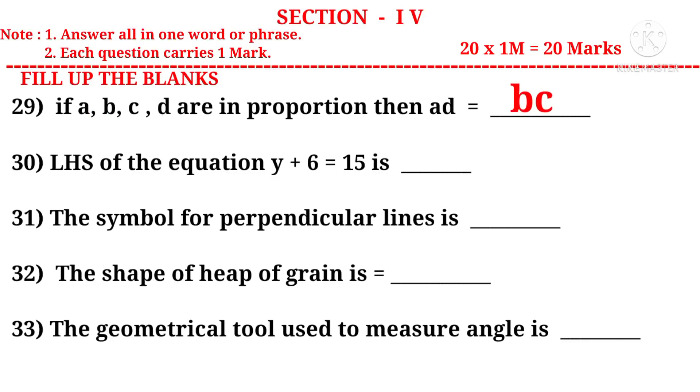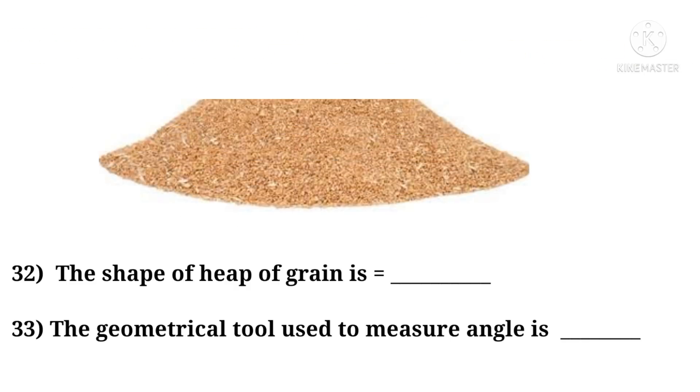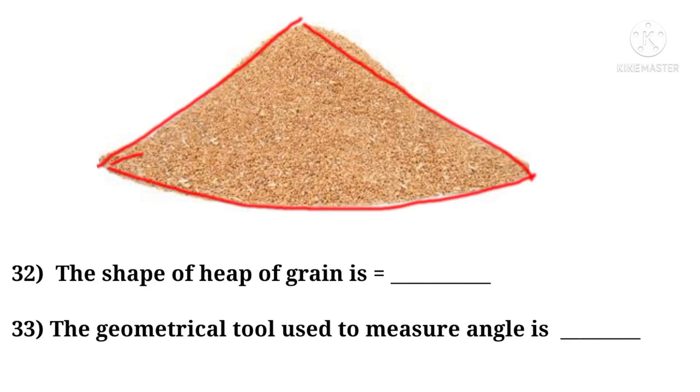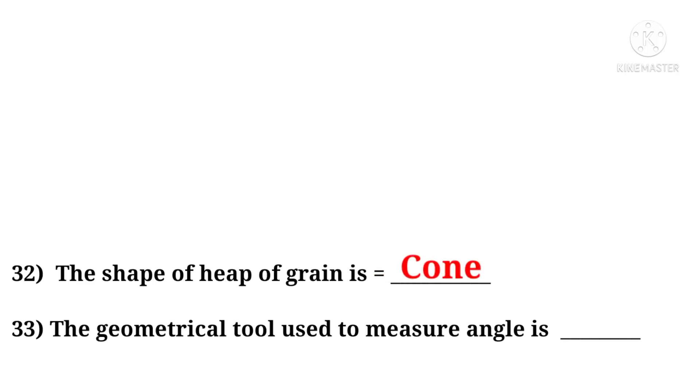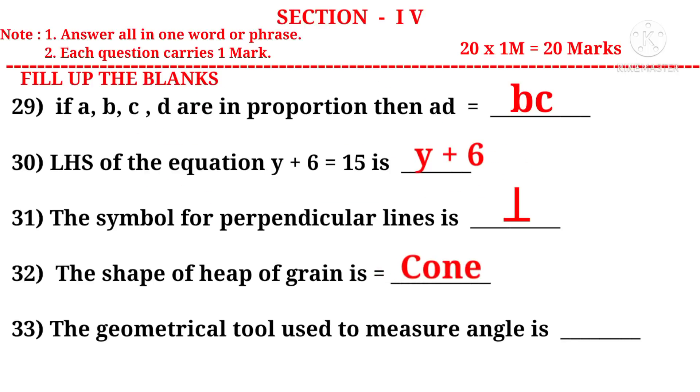30: LHS of the equation Y plus 6 equal to 15 is. LHS means left hand side of the equal to symbol. That is equal to Y plus 6. 31: The symbol for perpendicular lines is. It is in the shape of reverse T but termed as perpendicular. 32: The shape of heap of grain is. Let us see the figure. Now draw the border lines. Now observe that it is in the shape of a cone. 33: The geometrical tool used to measure angle is protractor.